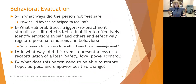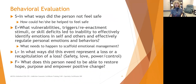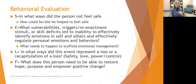When we look at individual behaviors using the SELF model, we want to ask: in what ways did this person not feel safe, and how could they be helped to feel safe? If someone starts withdrawing, yelling, or self-injuring, we want to look at what ways the situation was recreating or triggering prior trauma-protective behaviors. E stands for Emotions: what vulnerabilities, triggers, reenactment stimuli, or skill deficits led to an inability to effectively identify emotions in themselves and others, and effectively regulate personal emotions and behaviors?